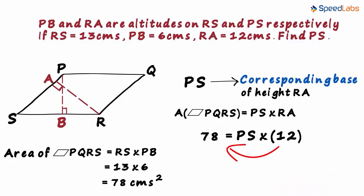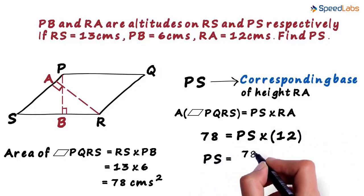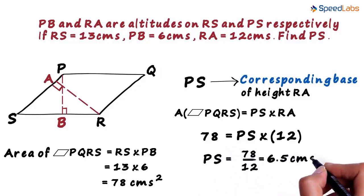Transposing 12 to the other side, we get the value of PS as 78 divided by 12, which equals 6.5 centimeters.